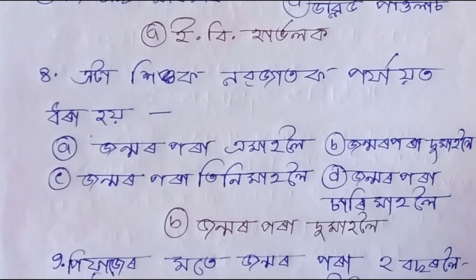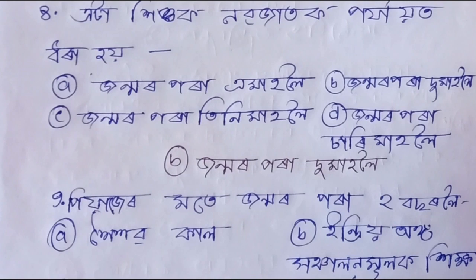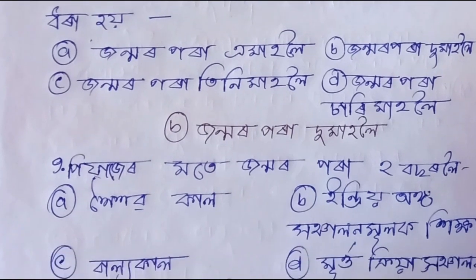Question number nine: Piyajer mathe janmarpraya dui basara loi. Option A: khoikopkal. Option B: indriyoonga aru hanchalan mulakkriya hikha. Option C: balokkal. Option D: murta kriya hanchalok. The correct answer is Option B: indriyoonga hanchalan mulakkriya.